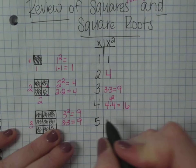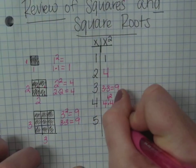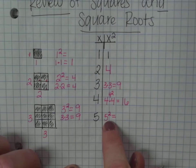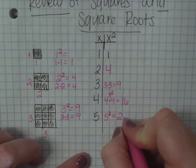5, 5 squared, which is 5 times 5, so I'm going to stop writing 5 times 5, because we know 5 squared is 5 times 5. 5 times 5 is 25.